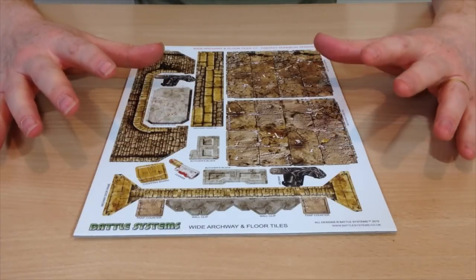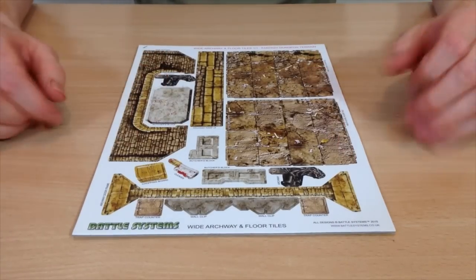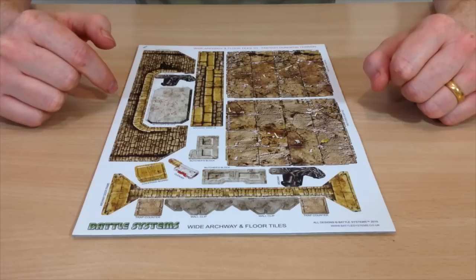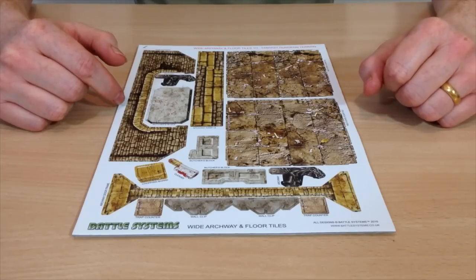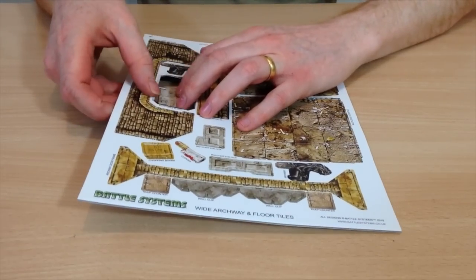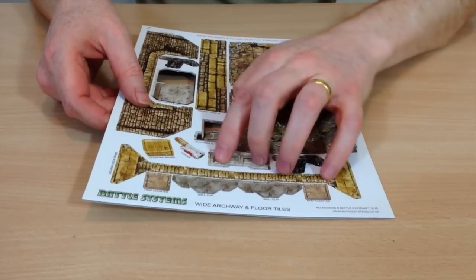Okay, so here's the wide archways and floor tiles, and it's also got the butcher's block on it there as well. So we might as well just start with that. Put the butcher's block out.